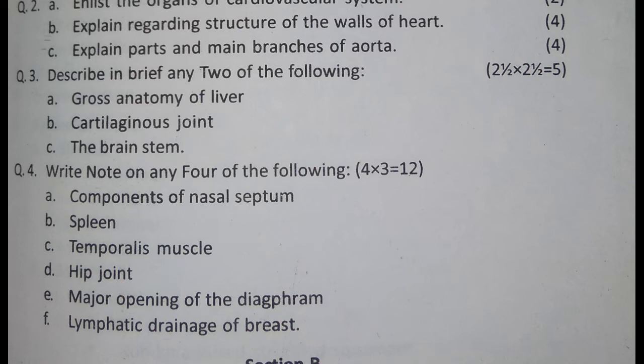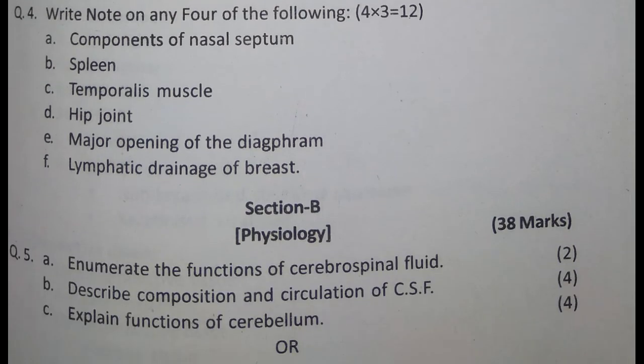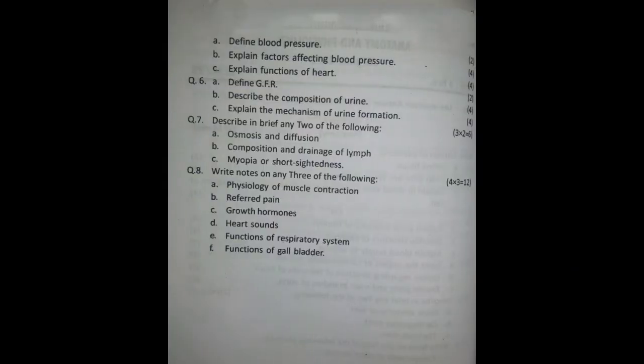Section B: Physiology, 38 marks. Question number 5: Enumerate the functions of cerebrospinal fluid, 2 marks. Describe composition and circulation of CSF, 4 marks. Explain functions of cerebellum, 4 marks.